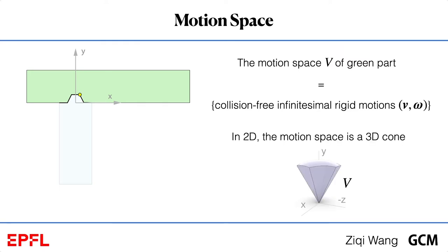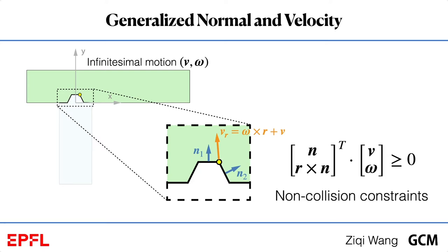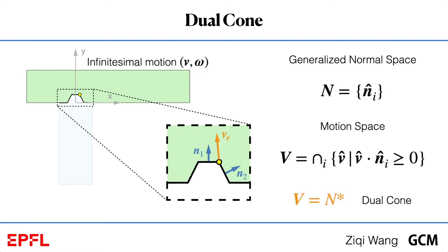So, how to compute this motion space? The part's motion is restricted by the non-collision constraint of each parallel contact point and contact normal. Non-collision constraint means that the dot product between vr, the instant speed of the contact point, and contact normal n should be non-negative. We can rearrange the equation. The left side then is called the generalized normal n hat, and the right side is called the generalized velocity v hat. So, for each parallel contact point and normal, it provides a linear non-collision constraint. Suppose N is the set of all generalized normals. The motion space V is the dual cone of the generalized normal set, which means that V must be a convex cone.